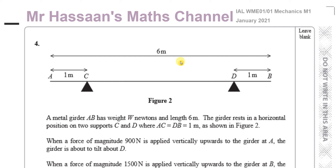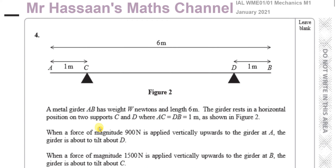It says: a metal girder AB has weight W Newtons and length 6 meters. The girder rests in a horizontal position on two supports C and D, where AC and DB are both 1 meter as shown in figure 2. When a force of magnitude 900 N is applied vertically upwards to the girder at A, the girder is about to tilt about D — meaning it's about to lift off from that support.